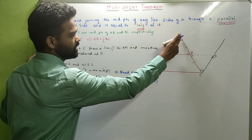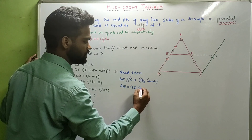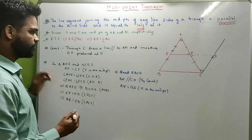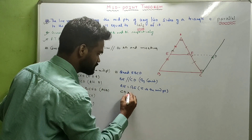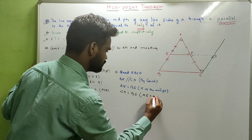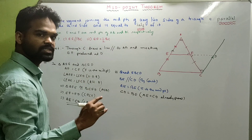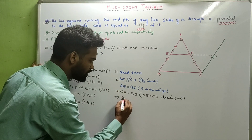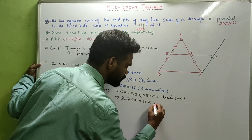Now, AE is equal to BE because E is the midpoint. And AE is equal to CD as already proved. Which means CD is equal to BE. So one pair of opposite sides are equal as well as parallel, which means quadrilateral EBCD is a parallelogram.